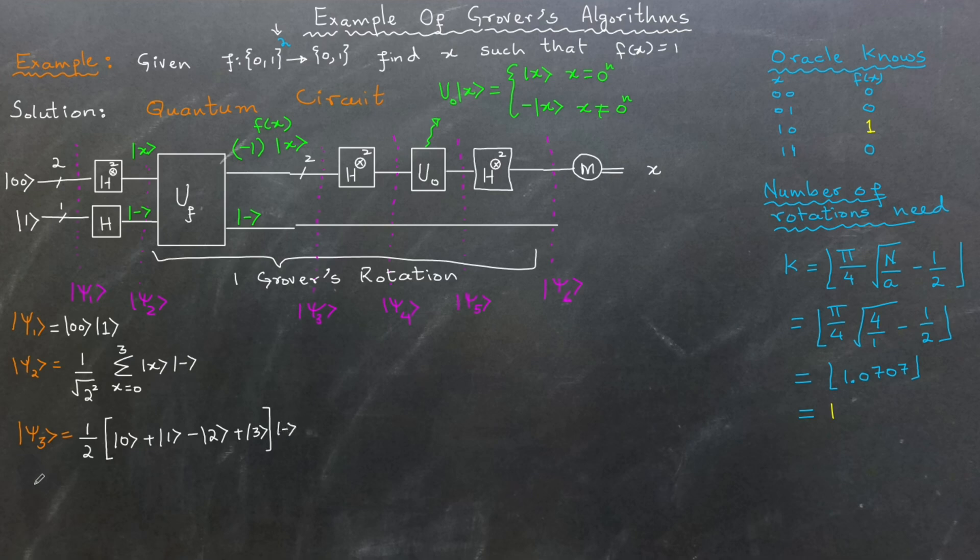We then move on to the diffusion operator which involves three steps. First, we apply Hadamard gate to the first register. To quickly compute Hadamard gate's output, we use a tabular method as explained in one of my earlier videos.